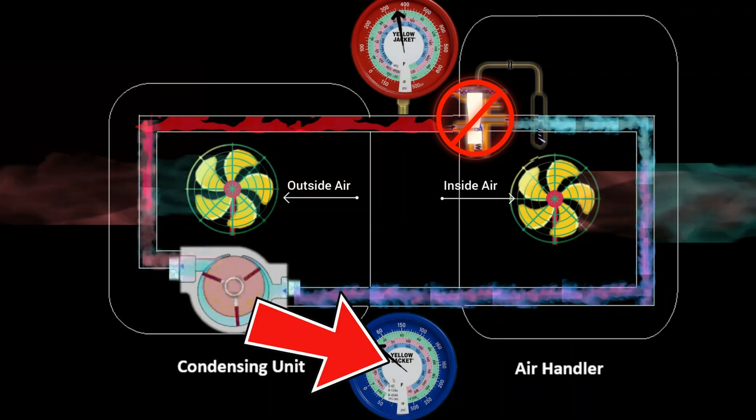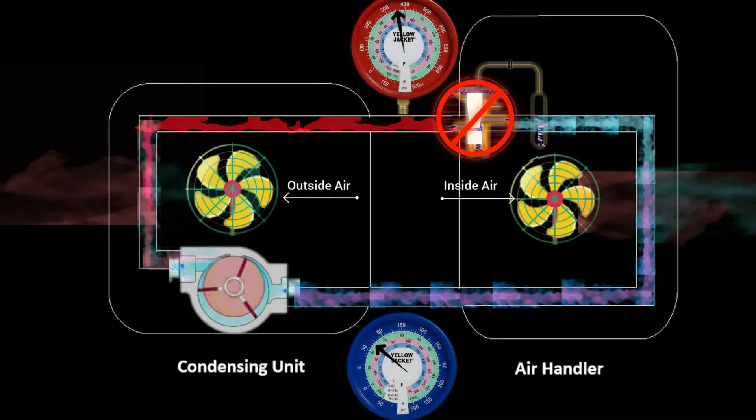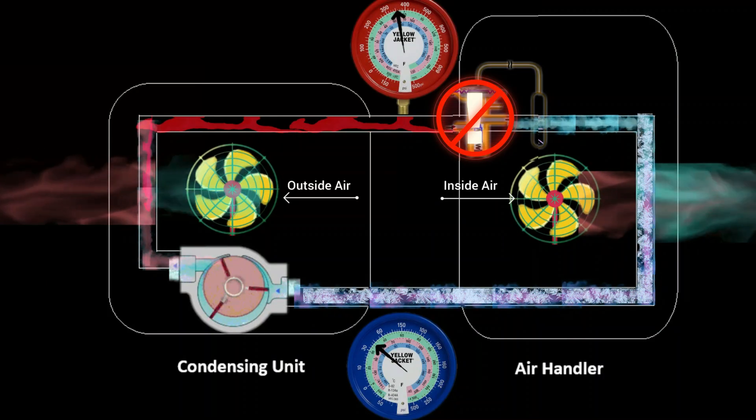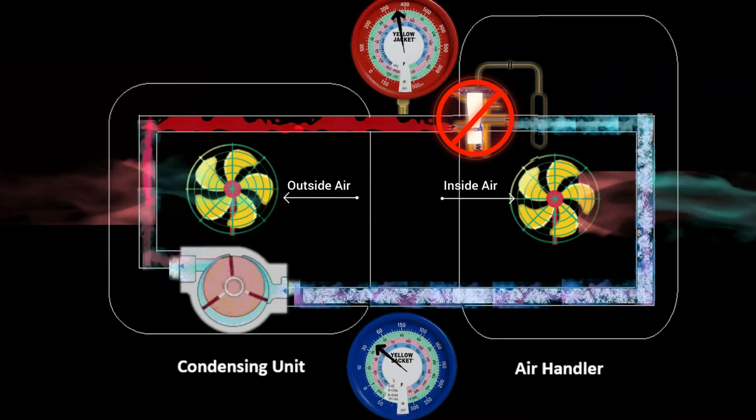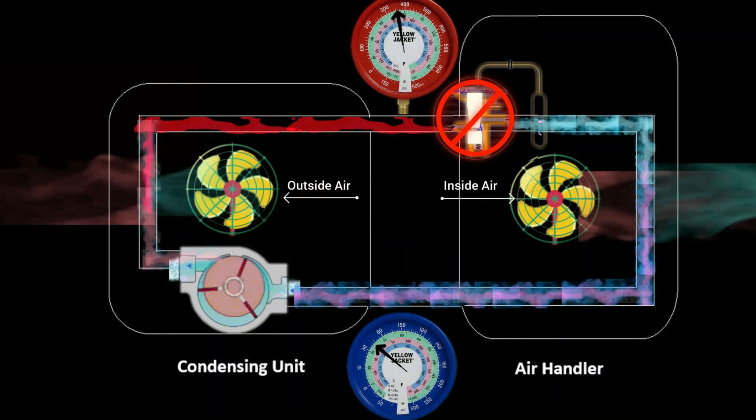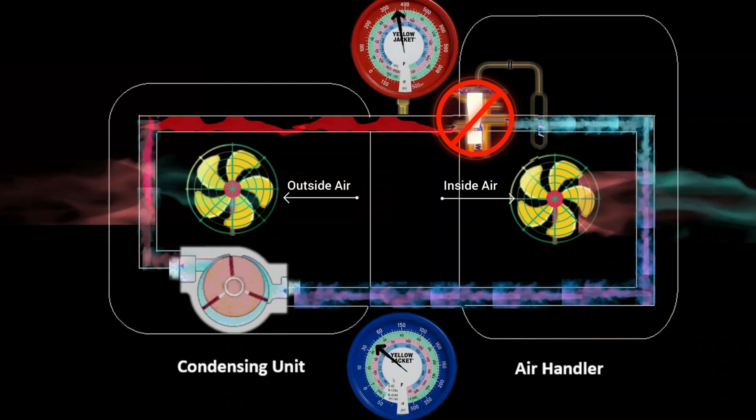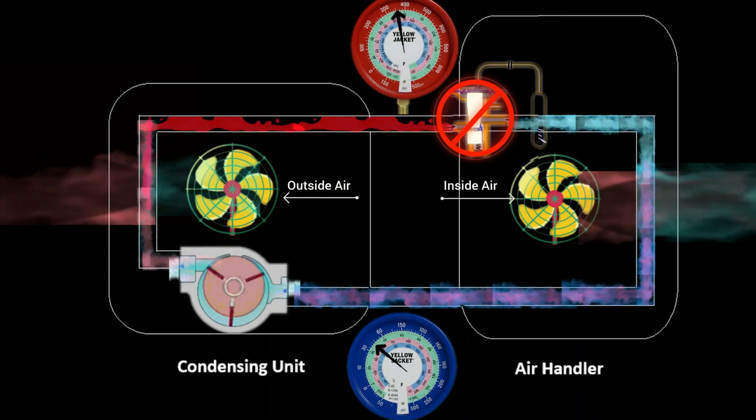What you will see is a drop in your suction pressure. If the metering device is still allowing some refrigerant to go through, you may actually start seeing frosting on your suction line. But if the restriction is so severe, you're not getting any refrigerant into the evaporator coil at all. What you will see is a very low suction pressure and no freezing of the line because there just simply isn't enough refrigerant to cause that pressure drop in those really cold temperatures.